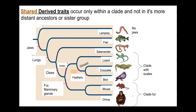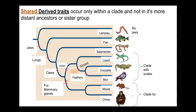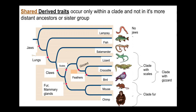We can then further divide things up. We can create a clade here — lizards, crocodiles, and birds. Feathers are a type of scale, and birds also have scales on their legs. All of this clade here is defined by the presence of jaws, lungs, claws, and scales. The mammals — primates and rodents — have jaws, lungs, claws, and fur. We can further subset out another clade: crocodiles and birds have a gizzard. Birds have a single unique derived trait — feathers — and no other organisms have feathers.